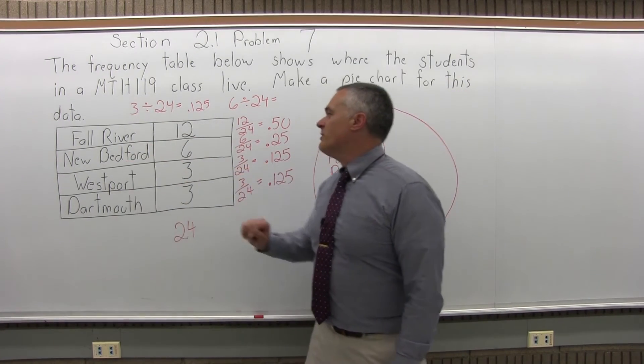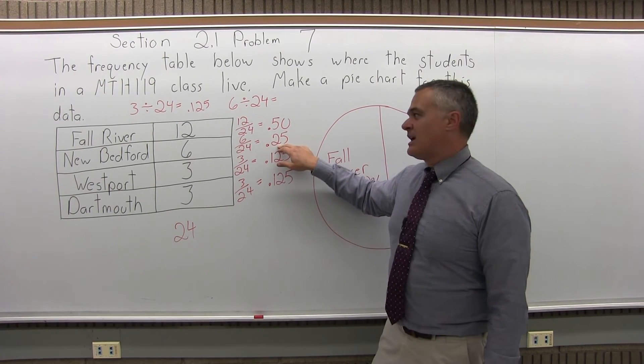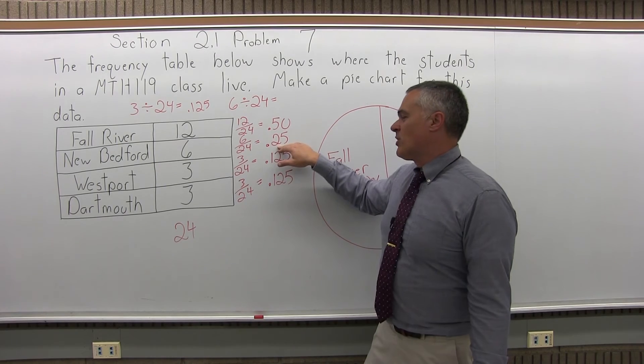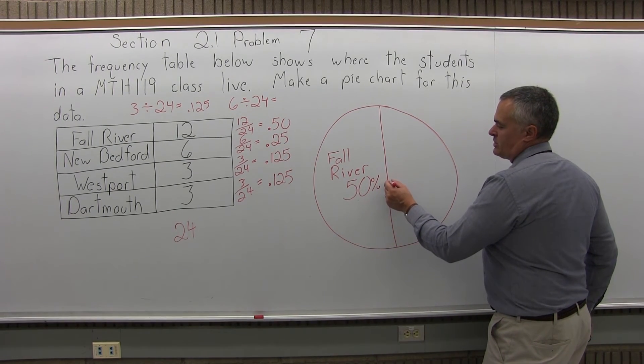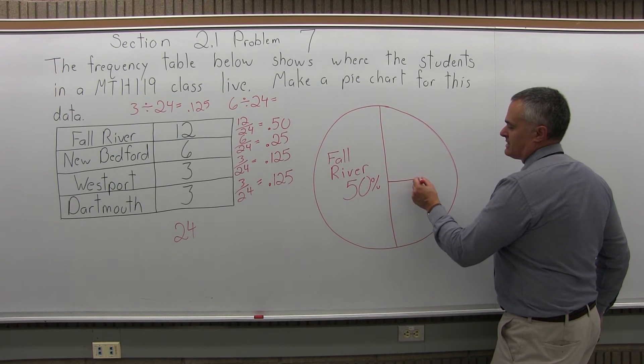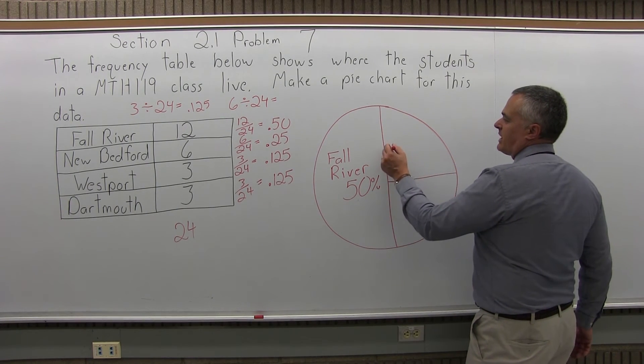The next group of students, New Bedford, is going to count for a quarter or 25% of the class. Again, some classes it might be more or it might be less. It's a particular made-up class for the sake of this problem. So, if one quarter of the class is from New Bedford, one quarter of my graph should be represented by New Bedford.